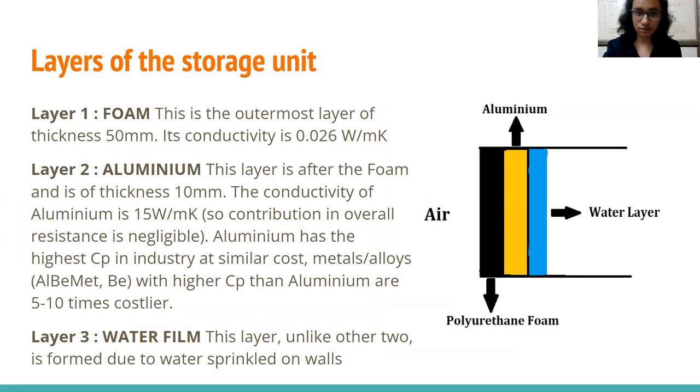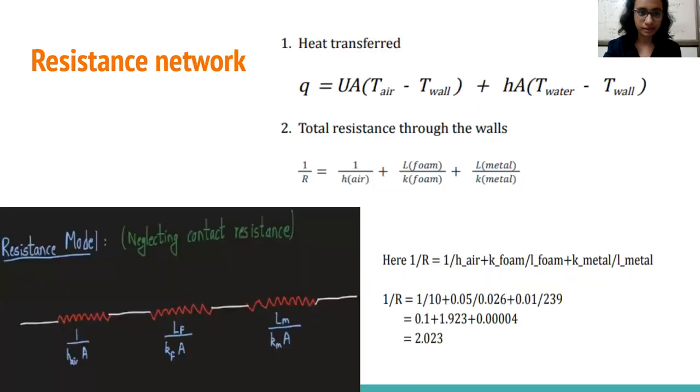So the layers of the storage unit are as follows. Foam is the outermost layer and it's the insulator layer. Its conductivity is 0.026 which has been taken from empirical sources. It will be a thick layer of 50 mm. Then we have the aluminium layer after the foam layer and its thickness will be 10 mm relatively low compared to the foam layer. The conductivity of aluminium is 15 watt per meter Kelvin and so its contribution and overall resistance is negligible. Aluminium has the highest Cp in the industry at similar costs. Therefore, it ensures an efficient as well as cost effective procedure. And the third layer is the water layer that will be accumulated on the side walls after it is sprinkled from the nozzle. Following this, we have the resistance network which highlights the three resistances that are in series. We have the convective resistance of the air, the conductive resistance of the foam and the conductive resistance of the metal.